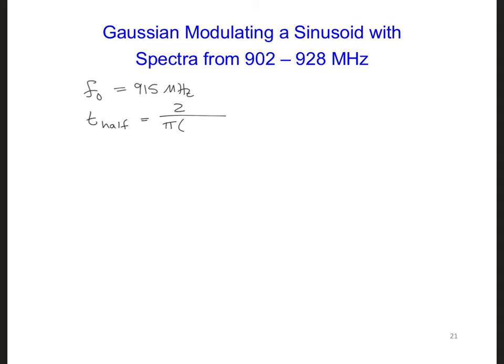Now here we could put 26 megahertz, but that will have our spectrum go a little bit beyond 928 megahertz. So I'm going to use 13 megahertz. And now for selecting T0,